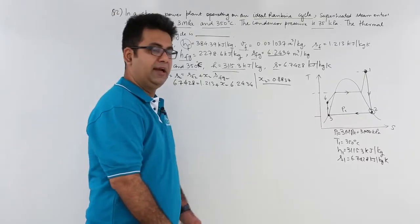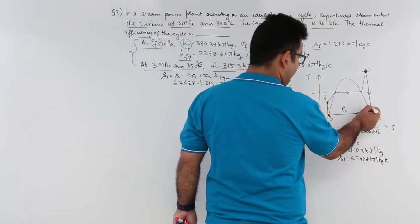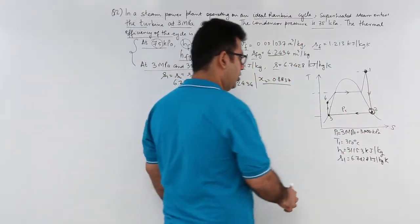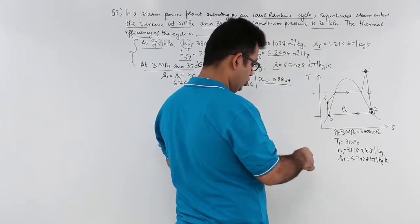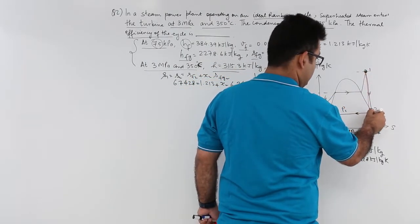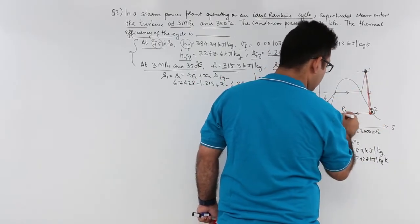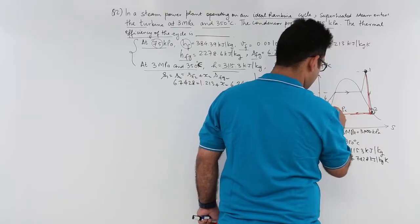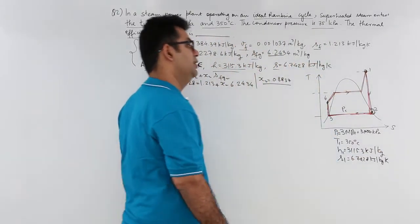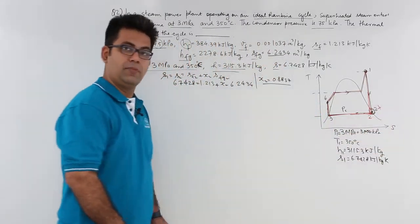So, it is evident that this point will not lie over here. This is incorrect. Your point 2 would lie over here. This is how your new cycle would look like or the exactness is like this. So, this is state 2, not this.